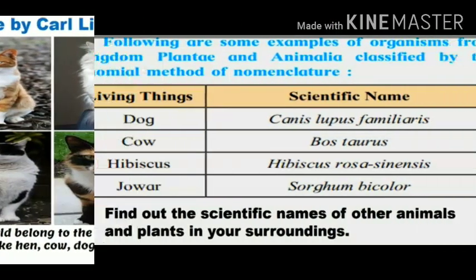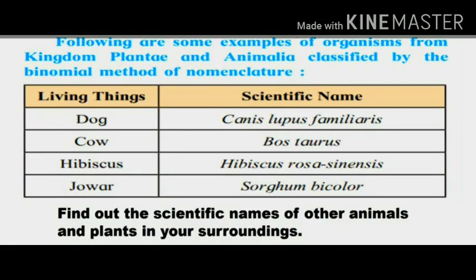Here is a chart showing examples of organisms from Kingdom Plantae and Kingdom Animalia classified by the binomial method of nomenclature — that is, they have two parts to their name: genus and species. For example, dog's scientific name is Canis lupus familiaris. Cow is Bos taurus. Hibiscus is Hibiscus rosa-sinensis. And jowar is Sorghum bicolor.